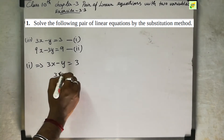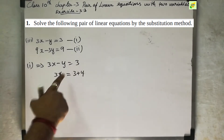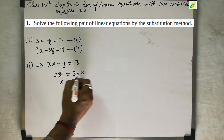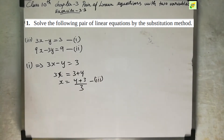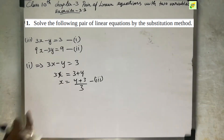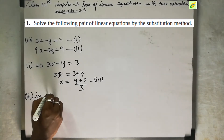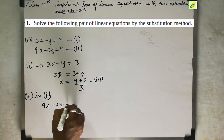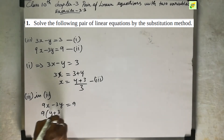x is going to be expressed in terms of y. From the first equation 3x minus y = 3, we get x equal to y plus 3 divided by 3.